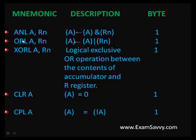Same as AND, logical OR is also performed and the result is stored in the accumulator. For XOR — logical exclusive OR — we perform the operation with A and Rn (accumulator and any register in 8051, with any bank selection). The size is 1-byte.